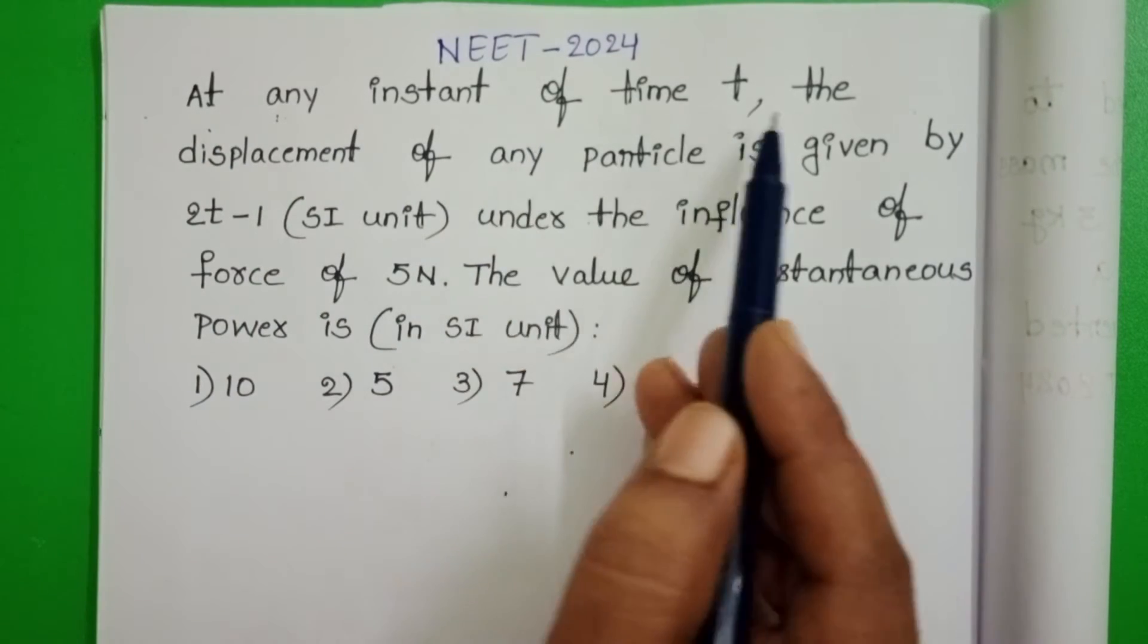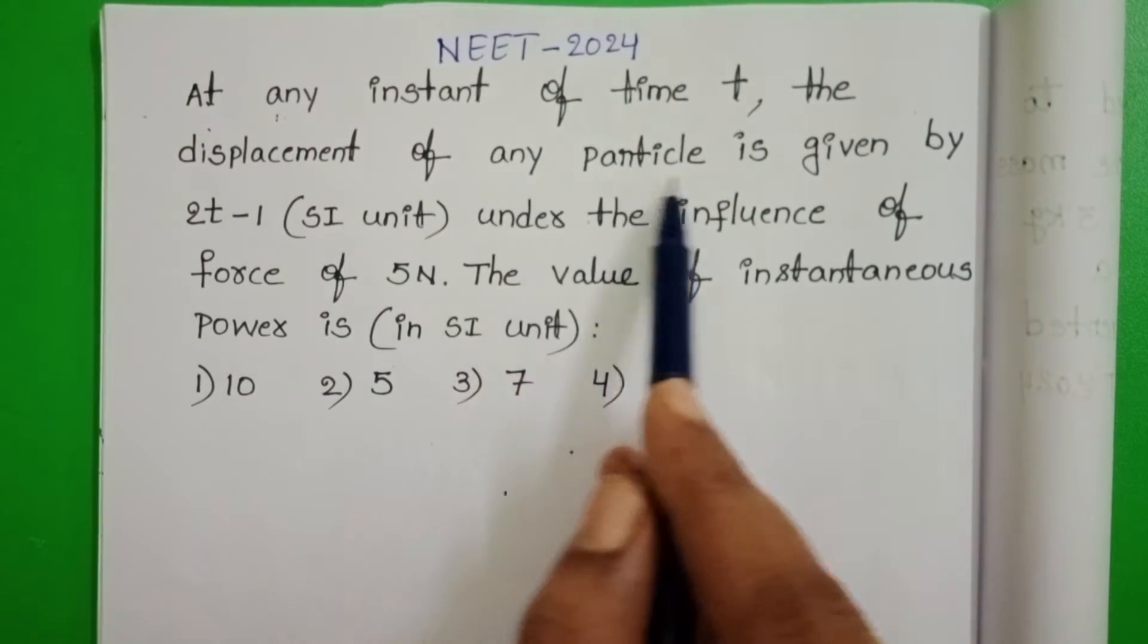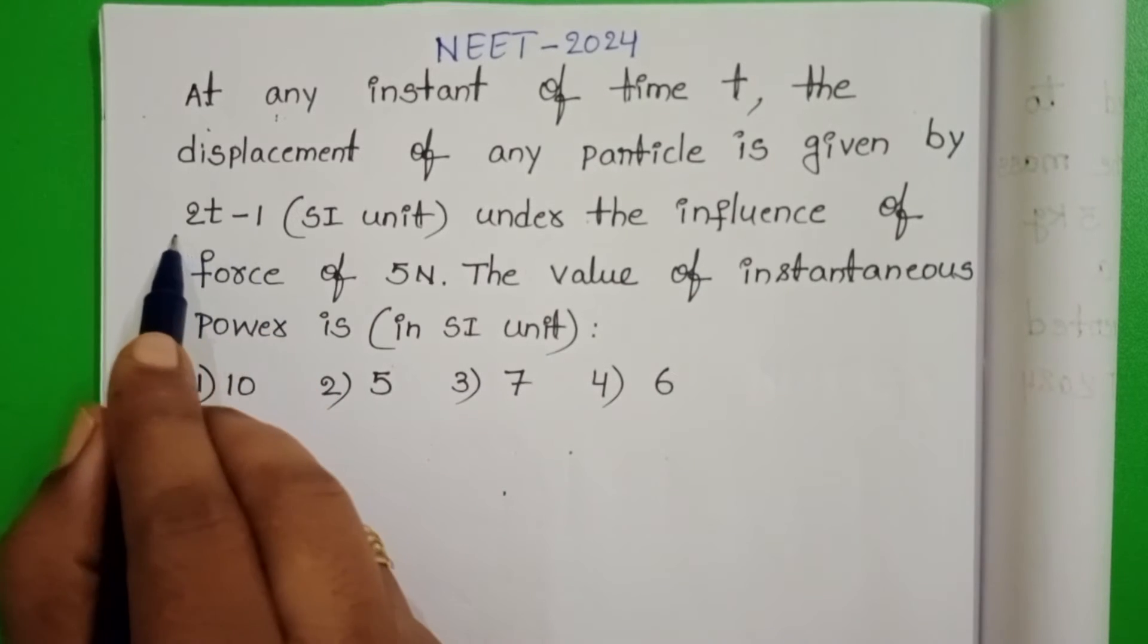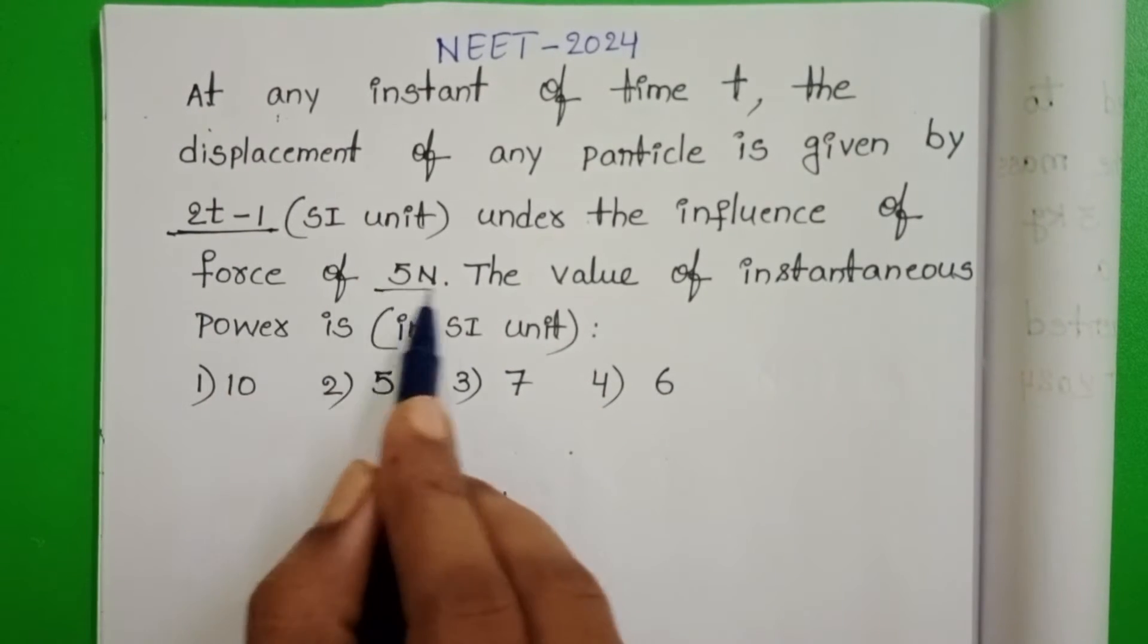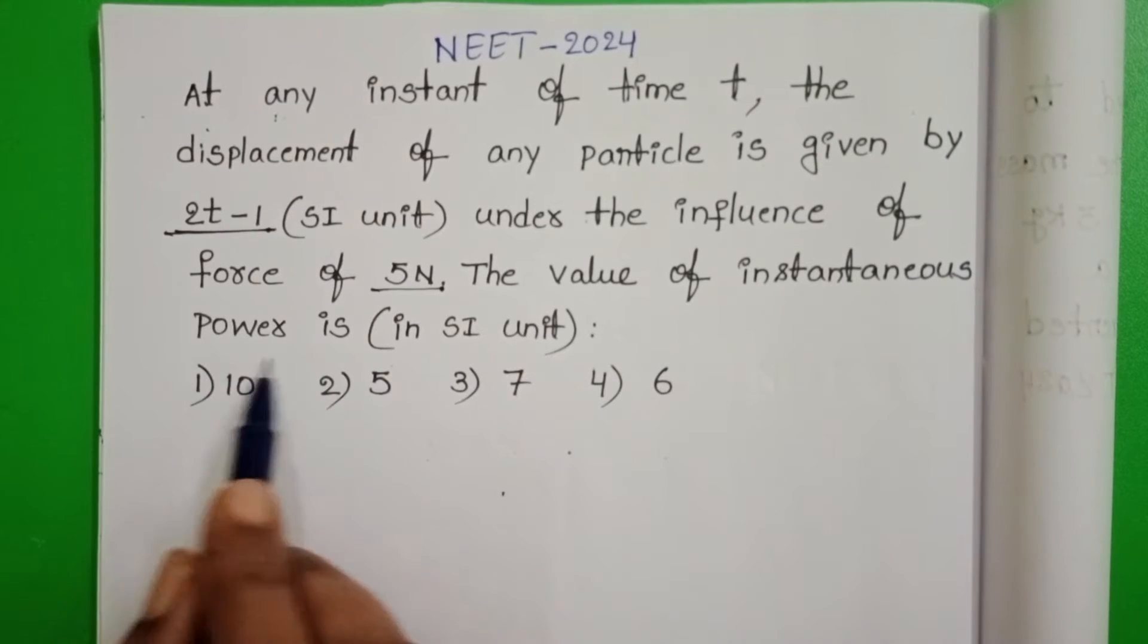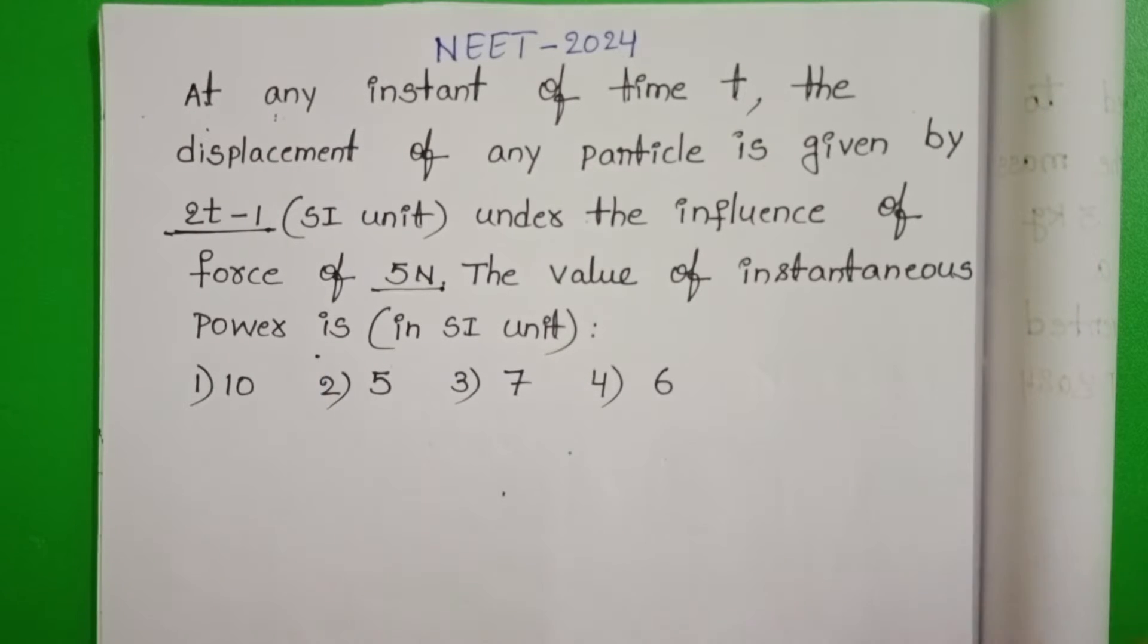At any instant of time t, the displacement of any particle is given by 2t minus 1 SI unit under the influence of force of 5N. The value of instantaneous power is in SI unit: